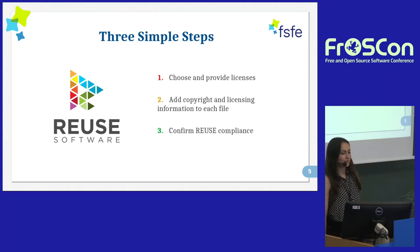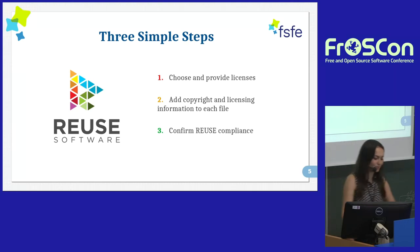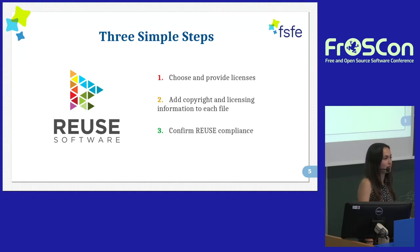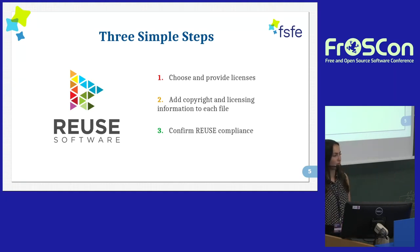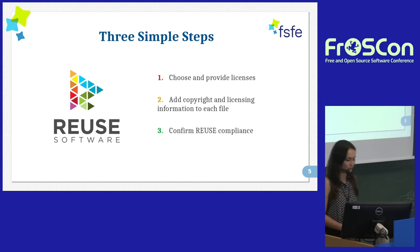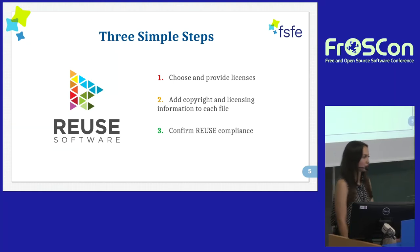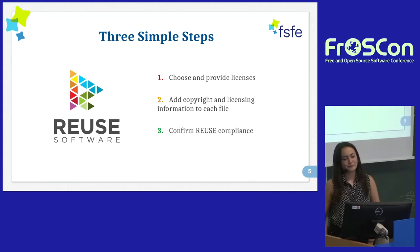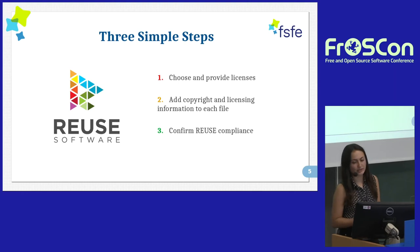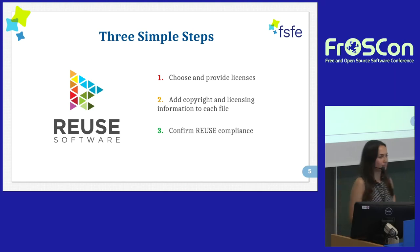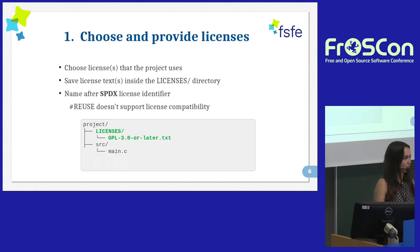How does Reuse help with all these issues? It's really three simple steps. First, you choose and provide the license or licenses of your repository. We encourage people to select well-known and recognized licenses. Second, you add copyright and licensing information to each file of your repository. Third, you confirm that your project is Reuse compliant. Let's go step by step.